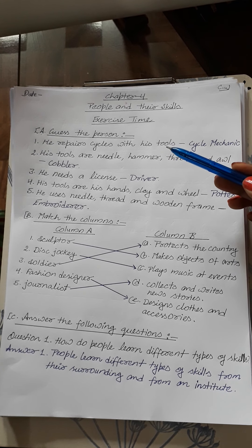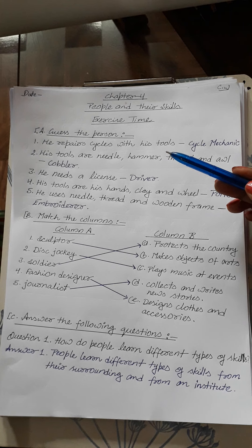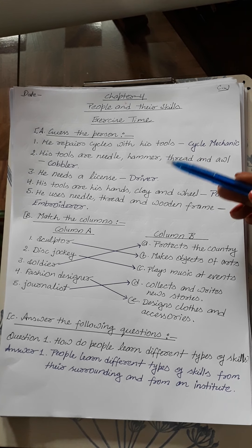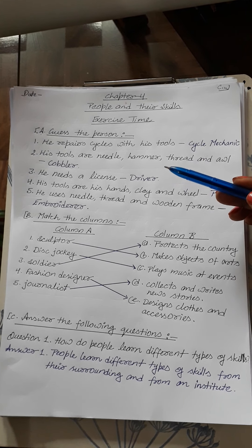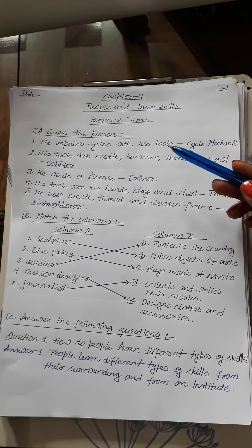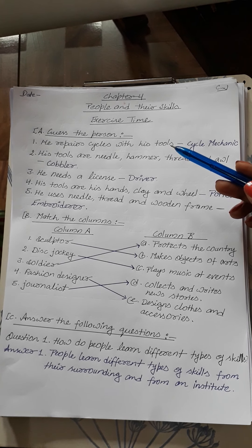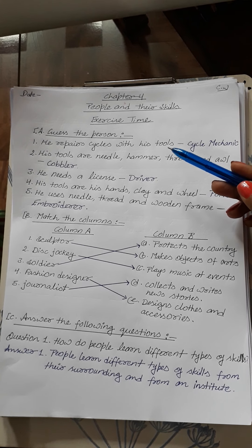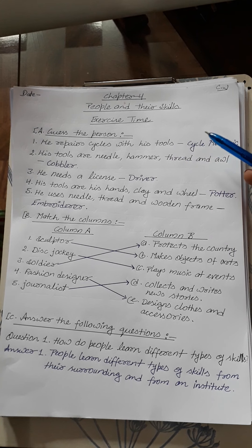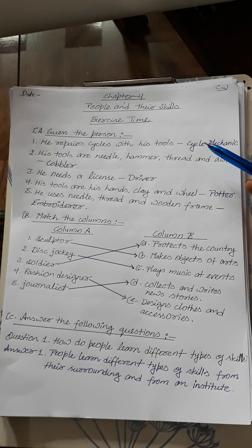Now you can see Part A: 'Guess the Person'. You have to guess the person for the following statements. Number 1: He repairs cycles with his tools. So he is a cycle mechanic.